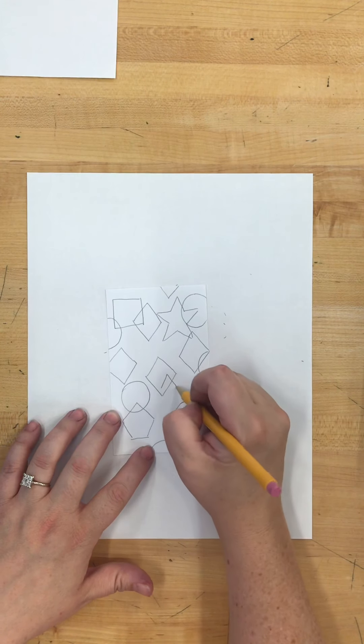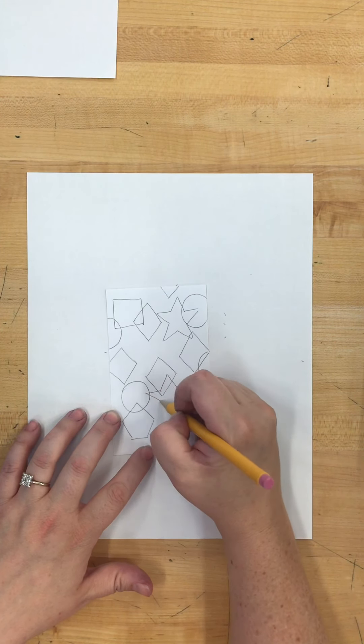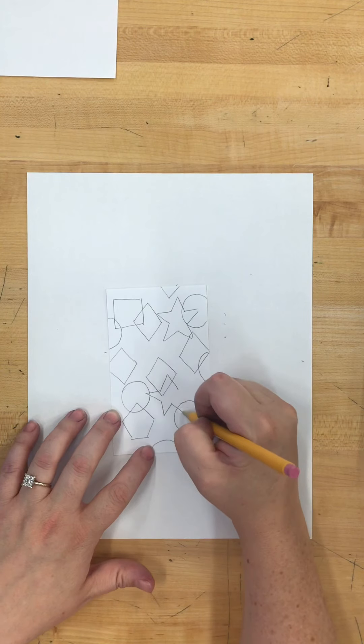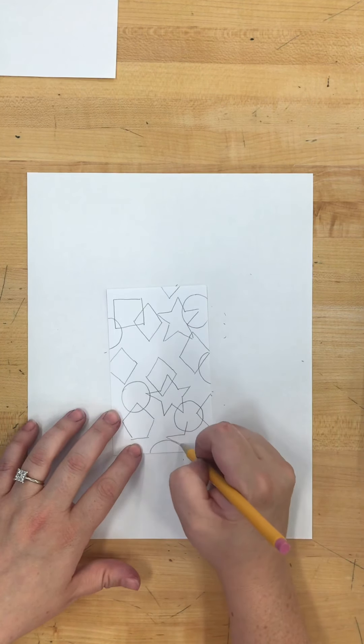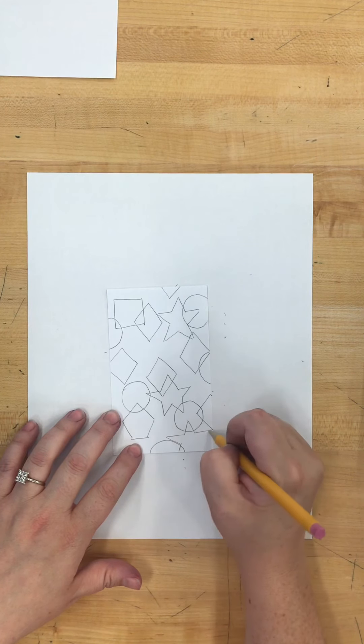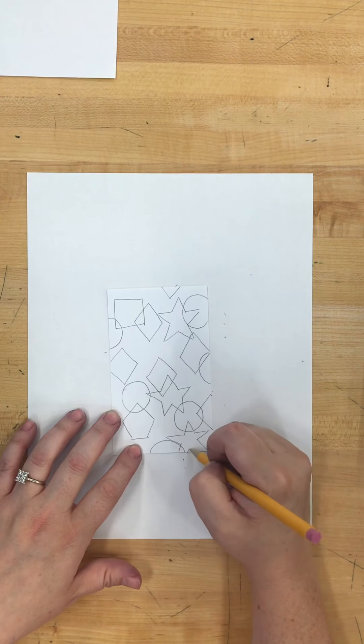Let's do some stars. And so we're just overlapping our shapes. And then later we will color them in and make it look really cool.